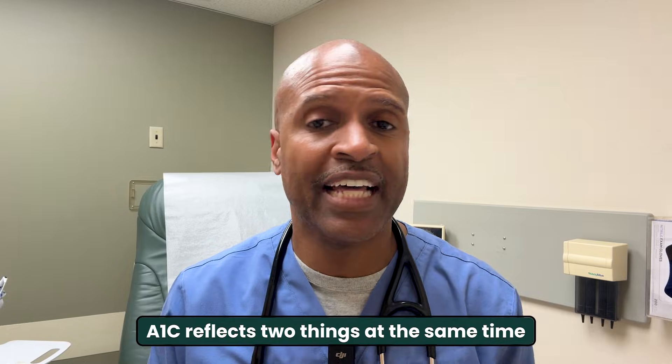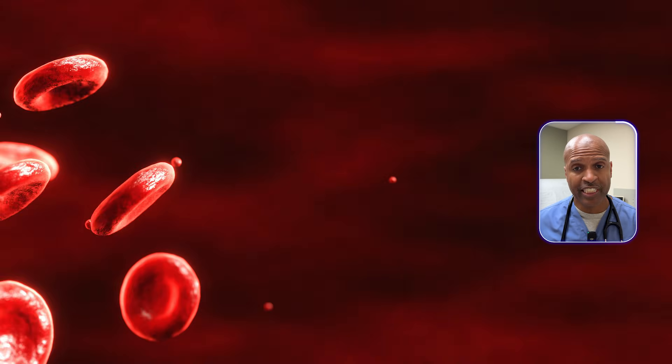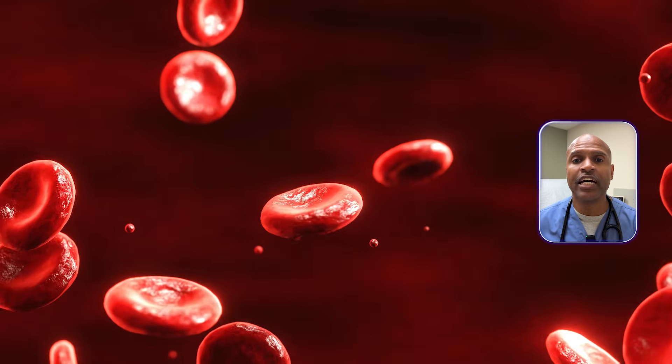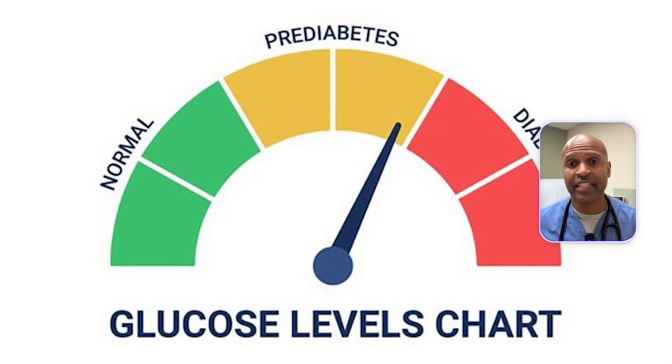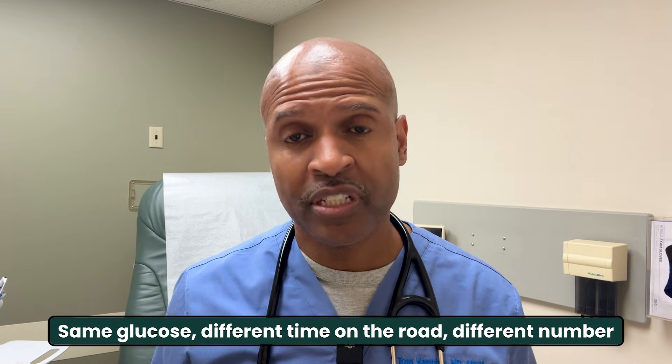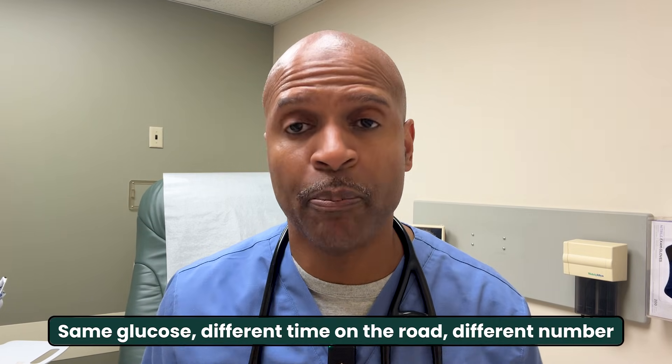A1C reflects two things at the same time: your glucose exposure and the lifespan of your red blood cells. If those cells live longer — as often happens in a calmer, low-inflammation environment — they have more time to pick up sugar tags. So your A1C can look a little higher even when your day-to-day glucose is excellent. If they live shorter, A1C can actually look deceptively low. Same glucose, different time on the road, different number.